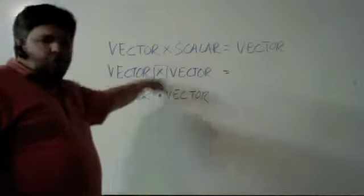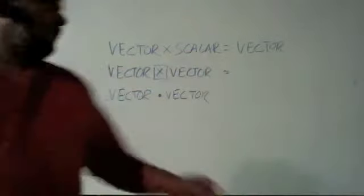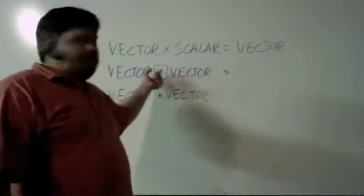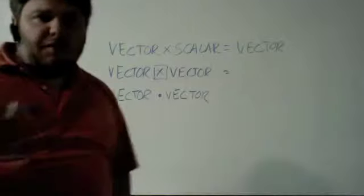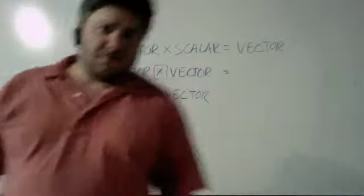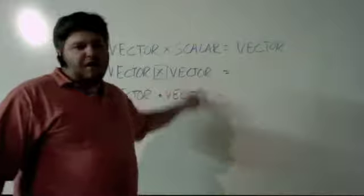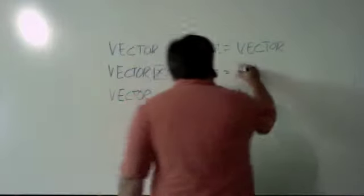Now, vector cross vector. We know this is a multiplication sign, but when dealing with vector multiplication, this symbol is actually representing what's called a cross product. So vector crossed with another vector results in a third vector.